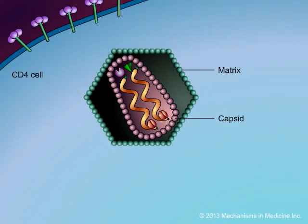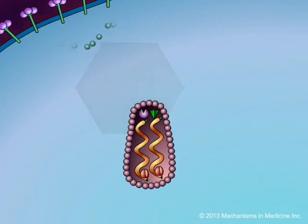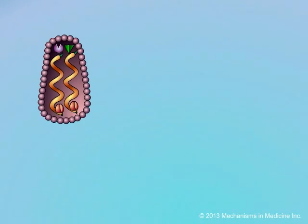After entering the cytoplasm of a CD4 cell, the uncoating of the viral core occurs. The matrix core disintegrates, releasing the capsid with the HIV genetic material and associated enzymes into the host cell.